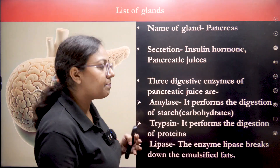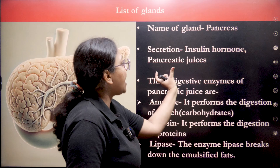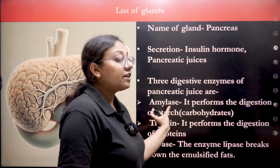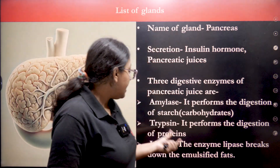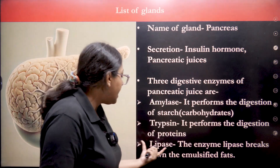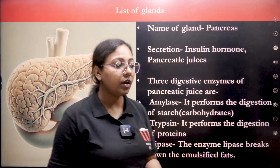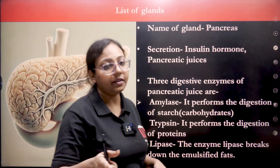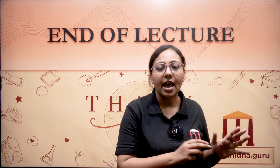In pancreatic juices, there are three digestive enzymes. First is amylase, which performs the digestion of starch or carbohydrates. Second is trypsin, which is for the digestion of proteins — similar to pepsin. Third is lipase, which breaks down emulsified fats. So the three enzymes in pancreatic juices are amylase, trypsin, and lipase.